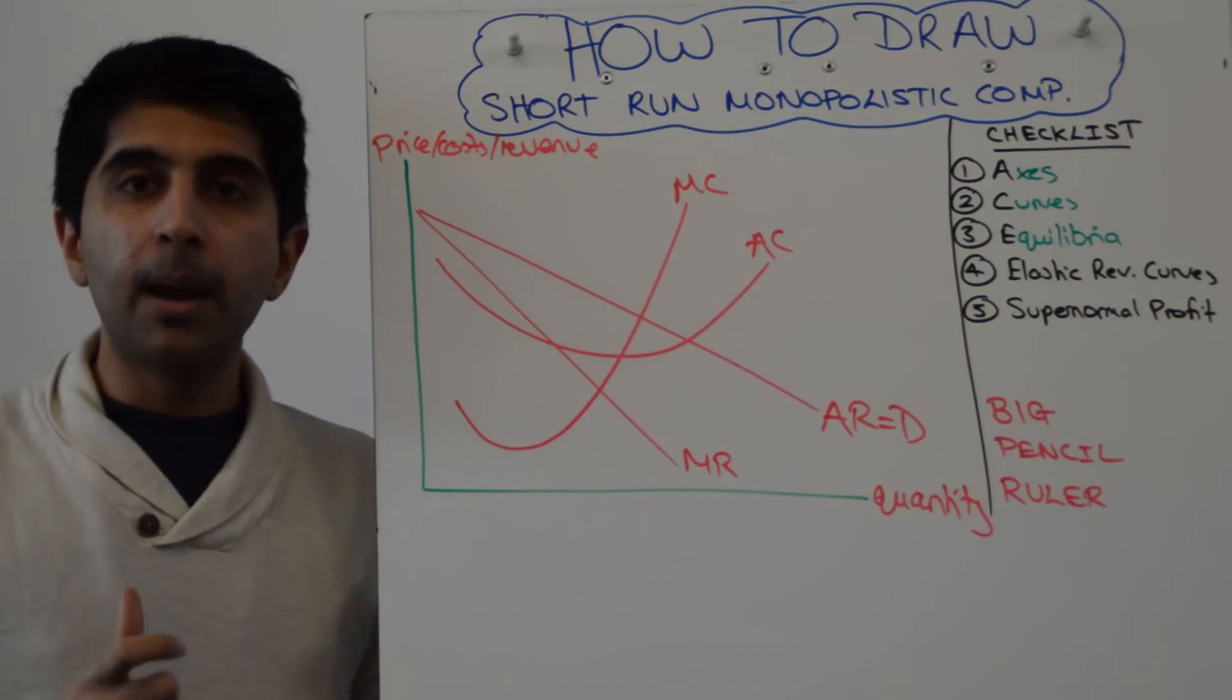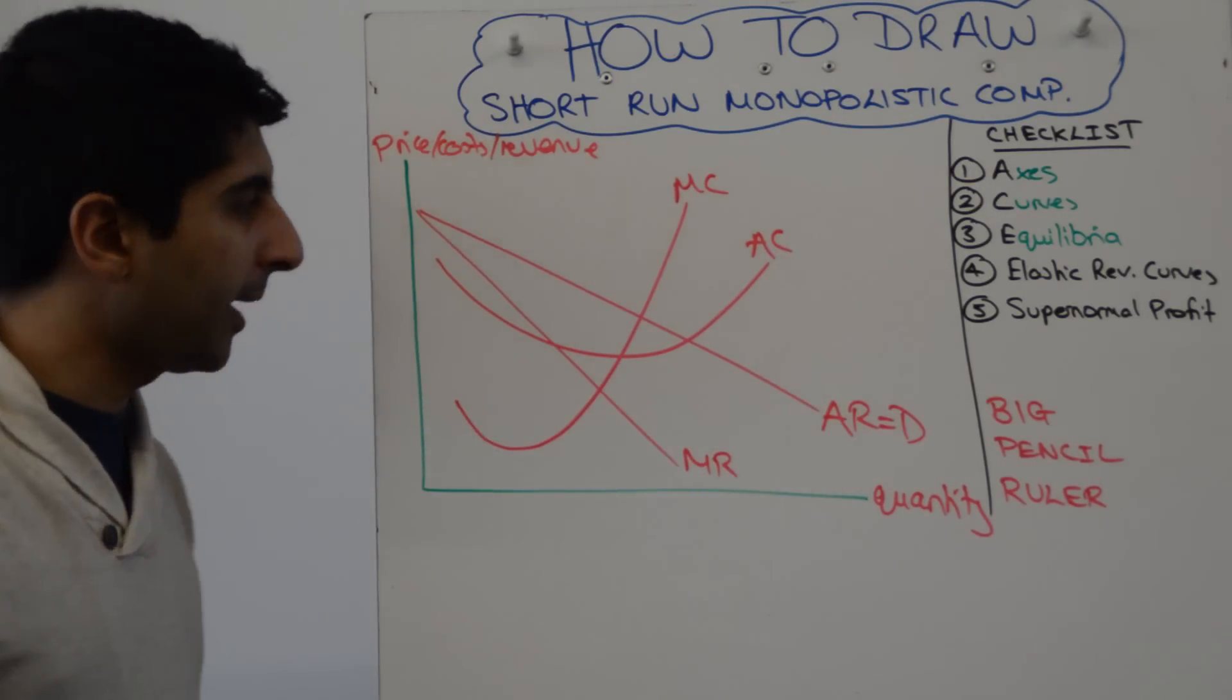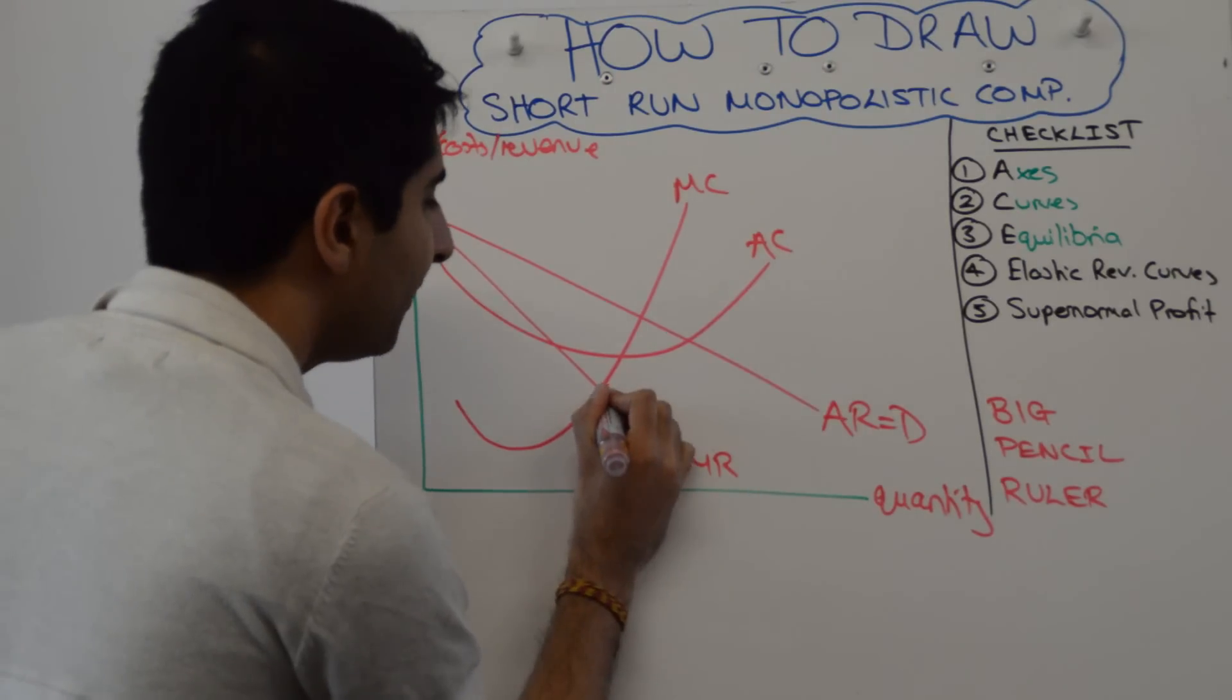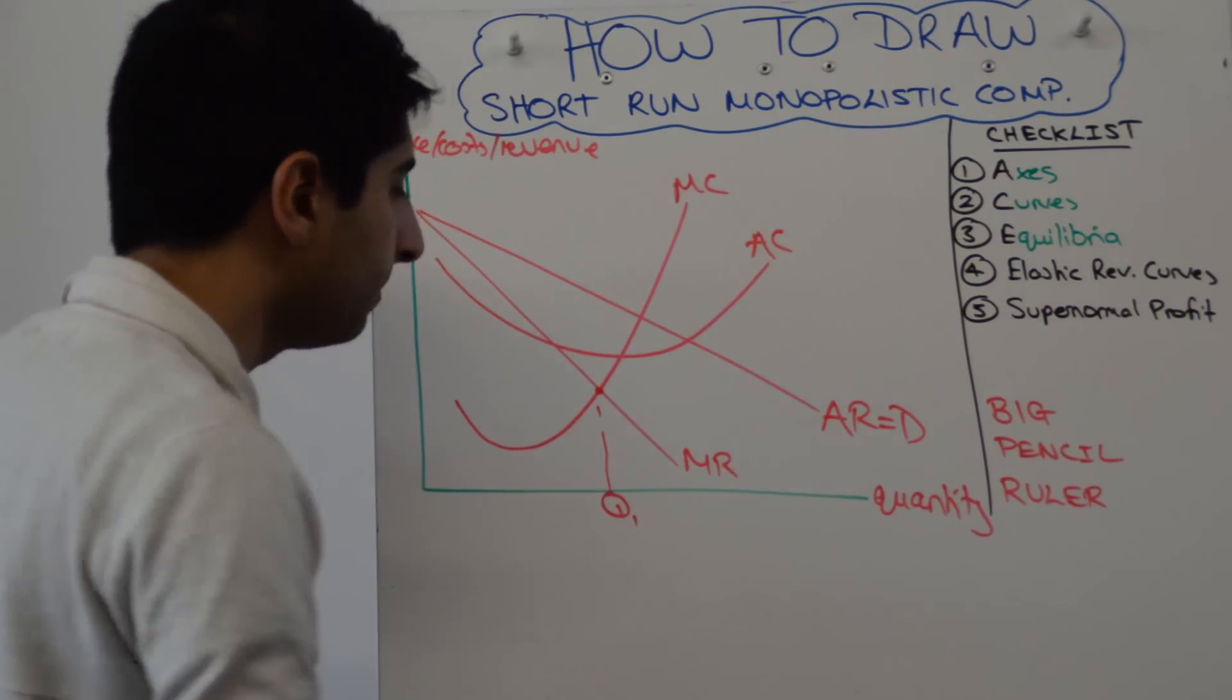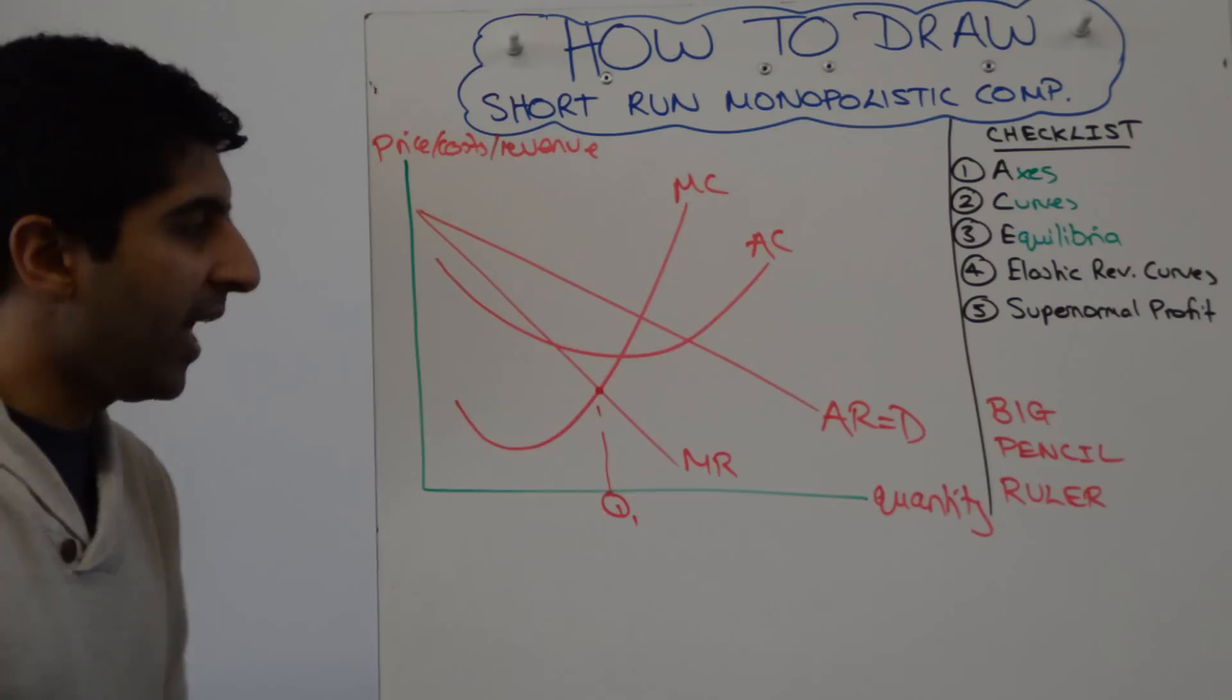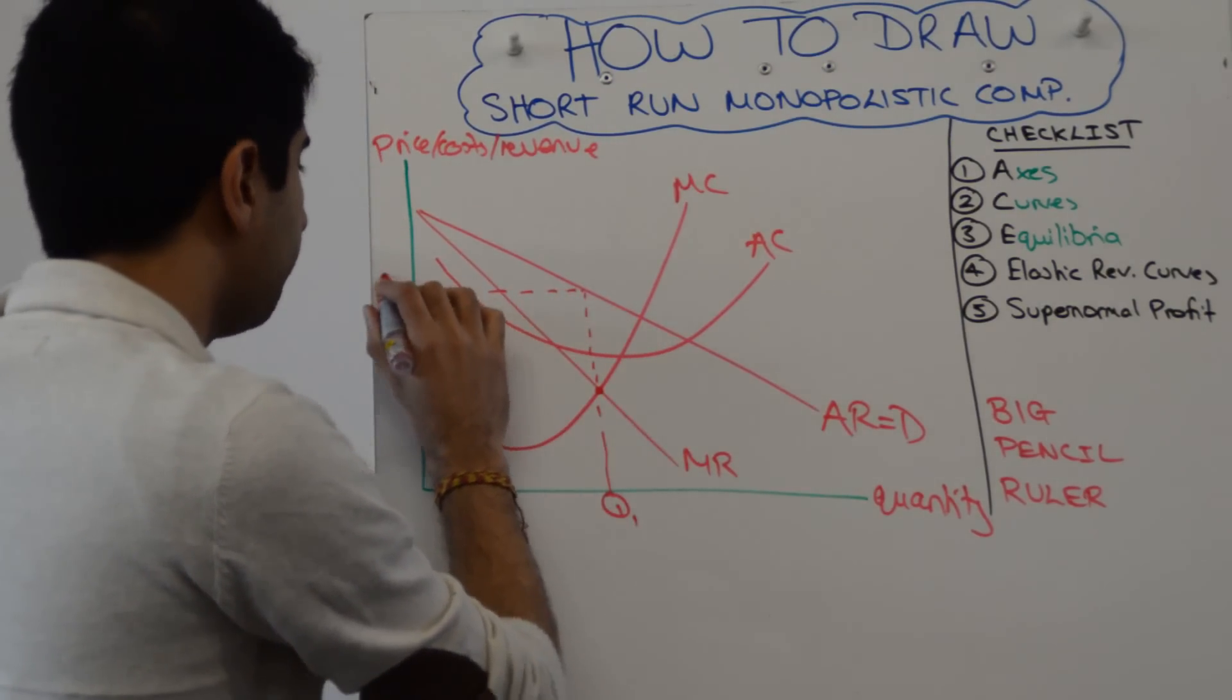Then we need to go to the profit maximizing point. Firms in monopolistic competition are assumed profit maximizers. That takes us to MC equals MR. That gives us a quantity. Call it Q1. We read the price off the AR curve. Let's call that P1.